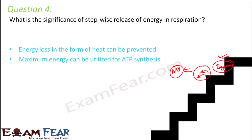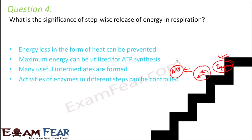Also, many useful intermediates are formed. For example, glycolysis is a 10-step process, and not only the final product pyruvic acid is formed — many intermediate products are also formed, which can be useful in other metabolic processes inside our body. Additionally, the activities of enzymes in different steps can be controlled: for each step, a different enzyme plays its role, so you can control that specific enzyme. If it were a one-step process, there would be many enzymes on a single step and you would not know which to control. These are the reasons why stepwise release of energy in respiration is very significant.